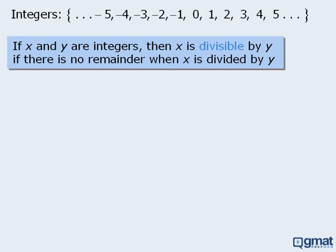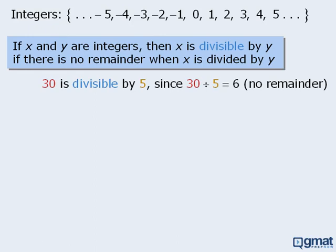If x and y are integers, then we will say that x is divisible by y if there is no remainder when x is divided by y. For example, 30 is divisible by 5 since 30 divided by 5 gives us a quotient of 6 with no remainder.